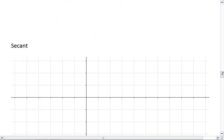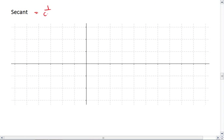Let's look at secant. So secant is 1 over cosine. Which means if we were to sketch out cosine.